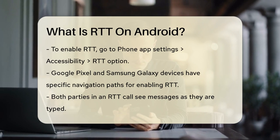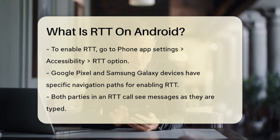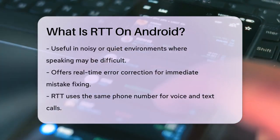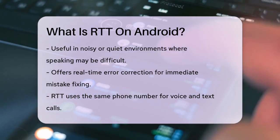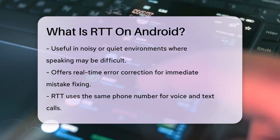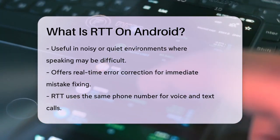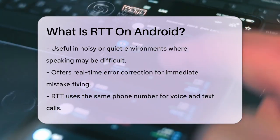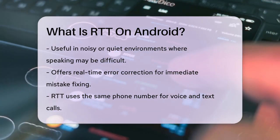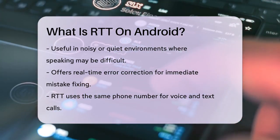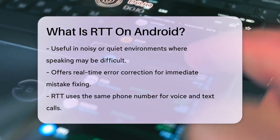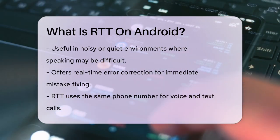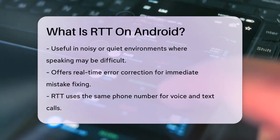When you make an RTT call, both you and the recipient see each other's messages as they are typed. This feature is especially useful in noisy or quiet environments where speaking might not be possible or preferred. It also provides real-time error correction, so you can see and correct mistakes immediately. RTT uses the same phone number for both voice and text calls and supports emergency services like 911. You can even connect to relay services and communicate with TTY users, making it a versatile tool for various communication needs.